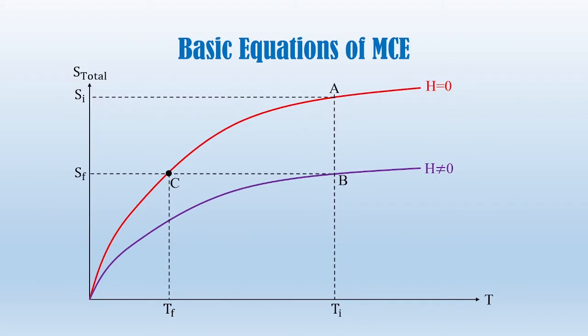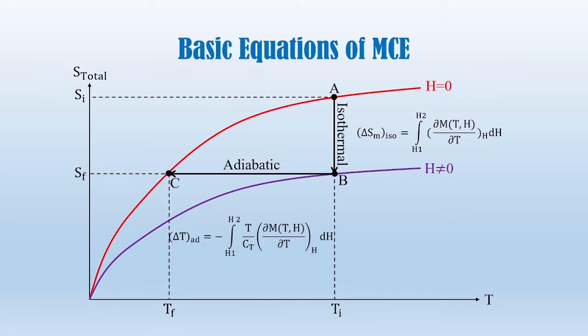Basic equations of magnetocaloric effect. The basic equation for calculating the magnetocaloric effect is a contribution from two main processes: isothermal and adiabatic. For the isothermal case, we simulated the integration of the derivative of magnetization. And for the adiabatic case, we simulated the above integration multiplied by temperature divided by total heat capacity. This has been done through very powerful mathematical software.